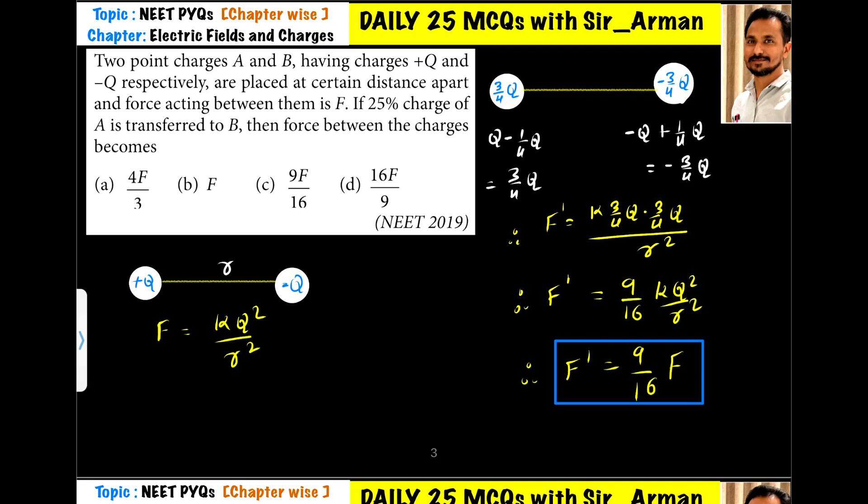Two point charges A and B having charges +Q and -Q respectively are placed at a certain distance apart, and the force acting between them is F. So here we have two charges +Q and -Q, and they are r distance apart. The force between them is kQ₁Q₂/r², which is kQ²/r².